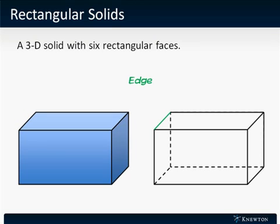Now, the lines that make up a rectangular solid are called edges. Places where the lines meet are called vertices, singular vertex.